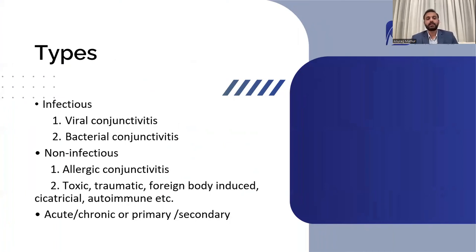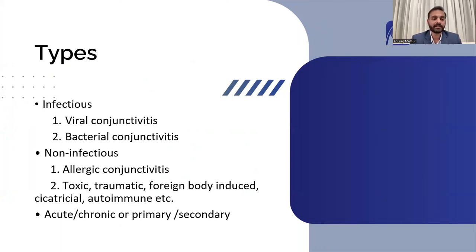With this background, we understand why it is important for all of us to know about conjunctivitis, so that we can treat patients effectively in a time-efficient and cost-effective manner. Conjunctivitis can be divided into two types: infective or non-infective. Infective conjunctivitis can be because of virus or bacteria, and non-infective conjunctivitis can be because of allergies, toxic substances, trauma, foreign body, autoimmune-mediated, or secretarial conjunctivitis.